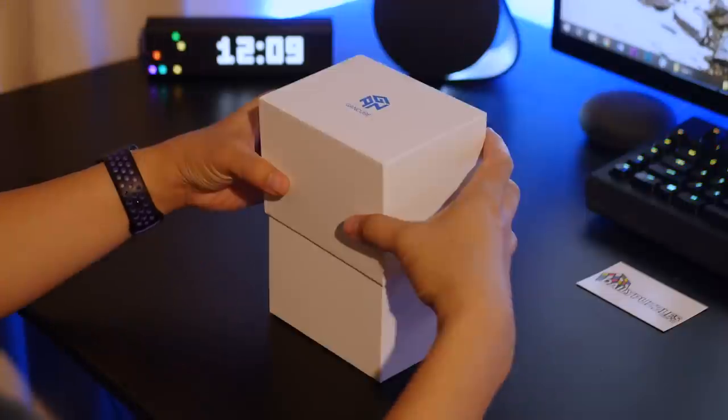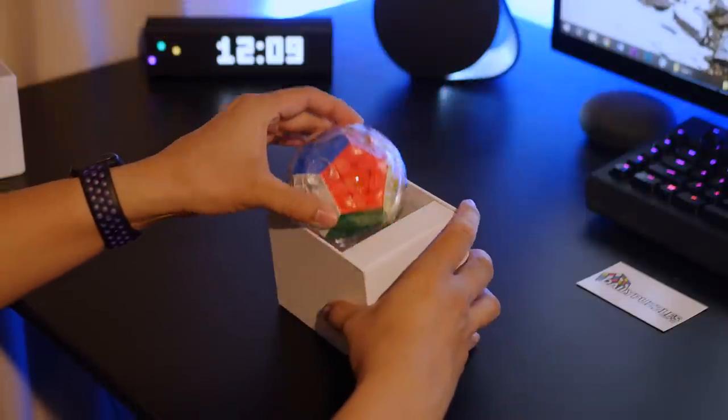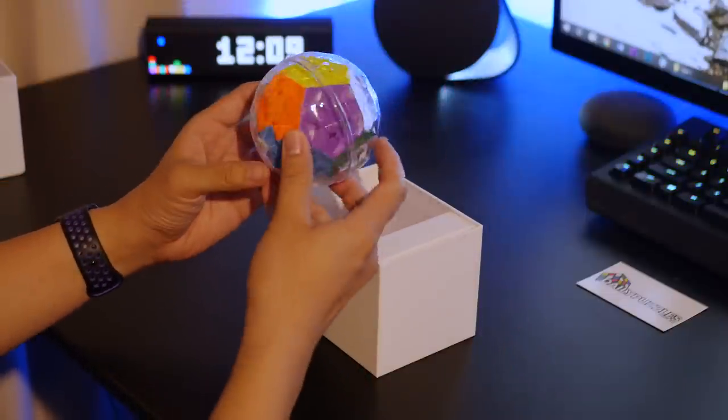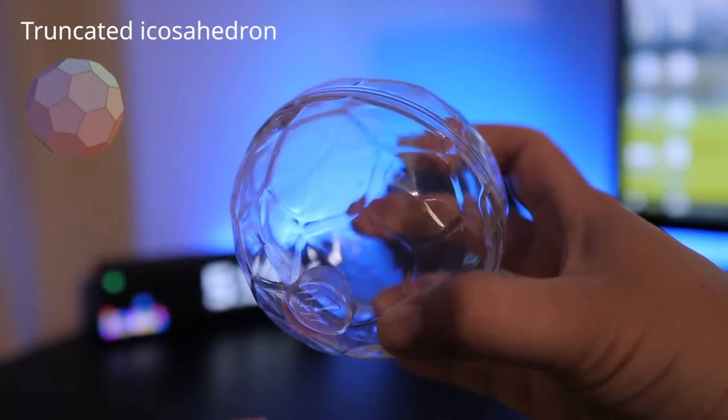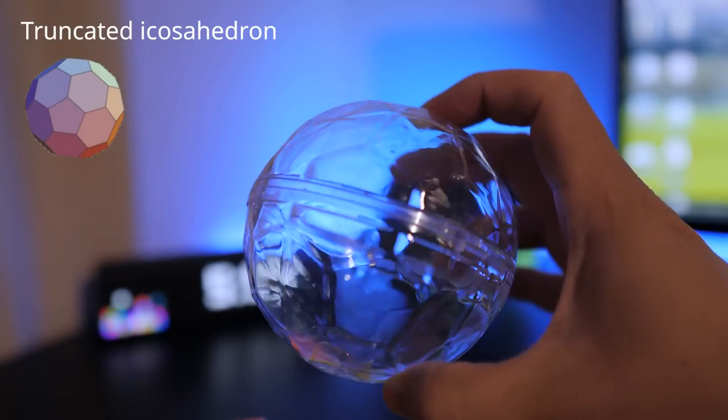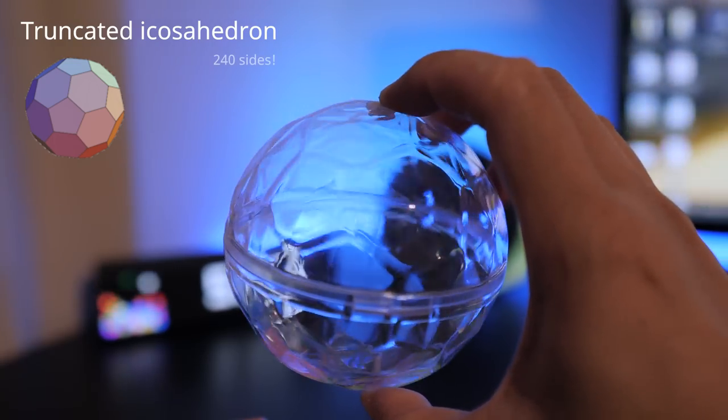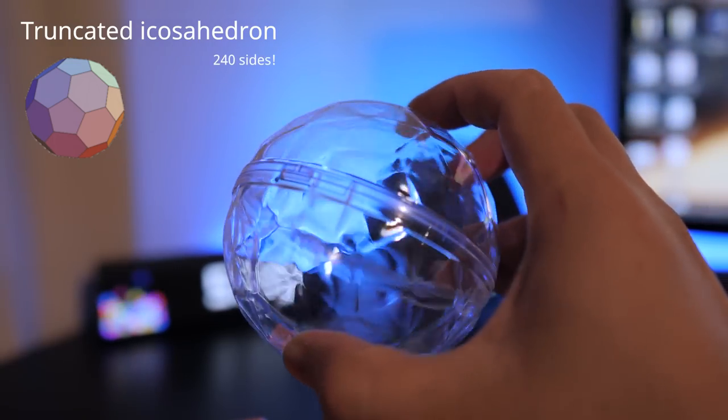The Garn Megaminx comes beautifully packaged, like all Garn cubes. It comes in a plastic orb that itself has a geometric quality, specifically a truncated icosahedron with 32 sides, like a soccer ball, except each pentagon and hexagon is fragmented so it's more like 240 sides. Sorry, I like maths.